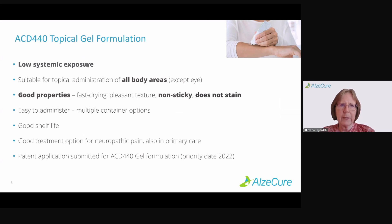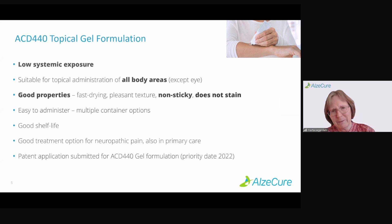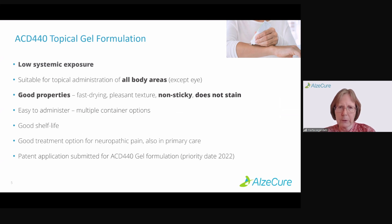ACD440 has been developed as a topical gel formulation because it gives low systemic exposure. It's very suitable for topical administration to any body area except for the eye. It has good properties for use — it's fast drying, doesn't stick, doesn't stain, and is easy for patients to administer. It has a good shelf life, meaning you can use it for a couple of years without changing the package. It's a good treatment option for neuropathic pain from a practical perspective, also in primary care, which is not always the case for other types of local treatments. We have a patent application submitted for the ACD440 gel formulation.